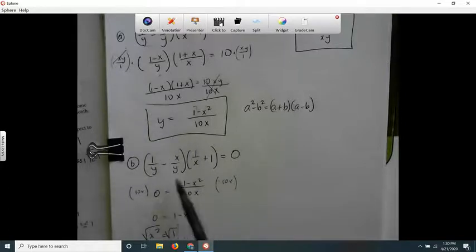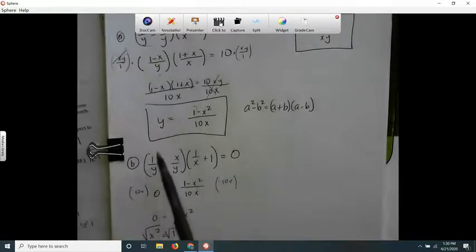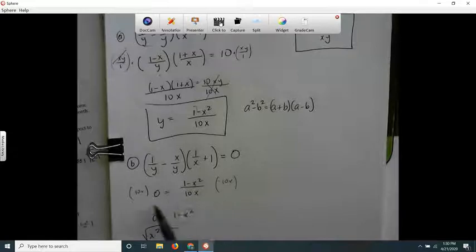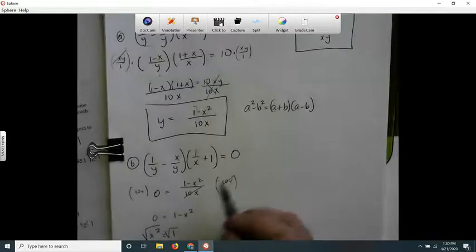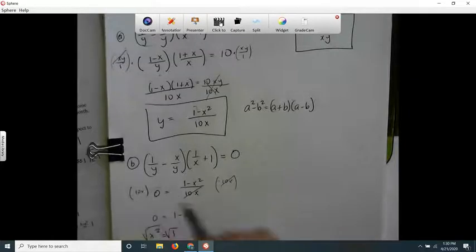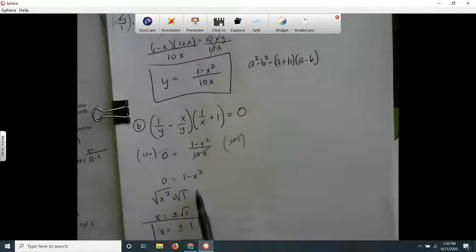I set this part equal to 0, then multiply both sides by 10x to get the fraction out. 0 times 10x is 0.